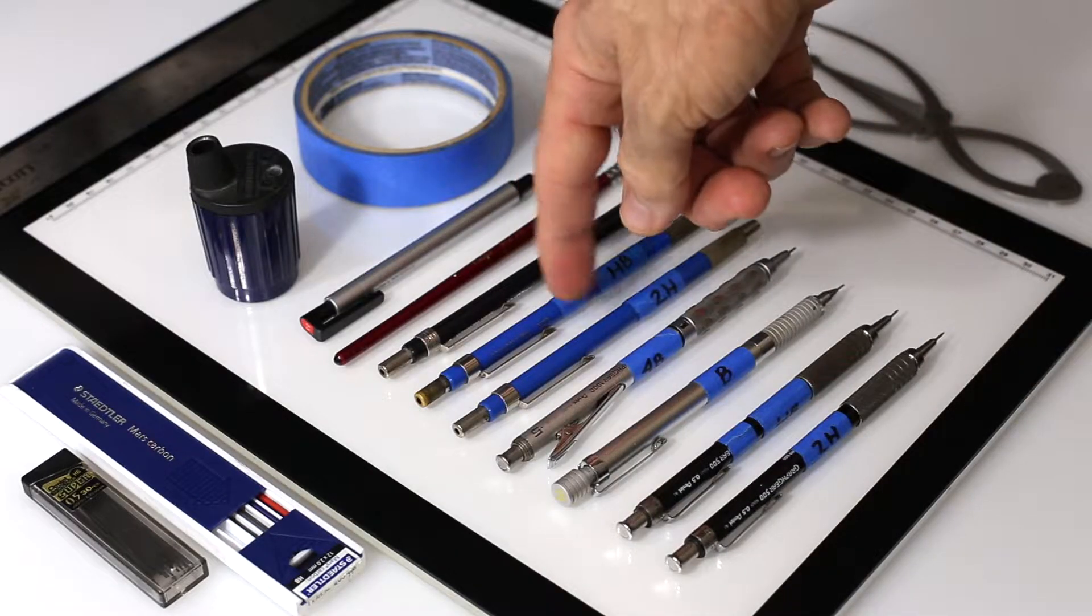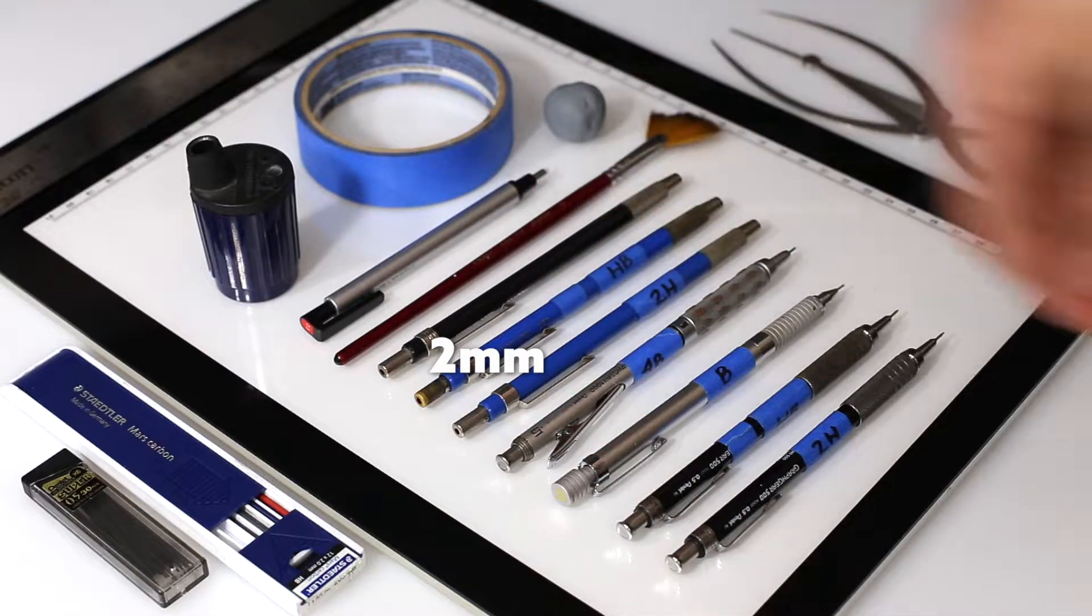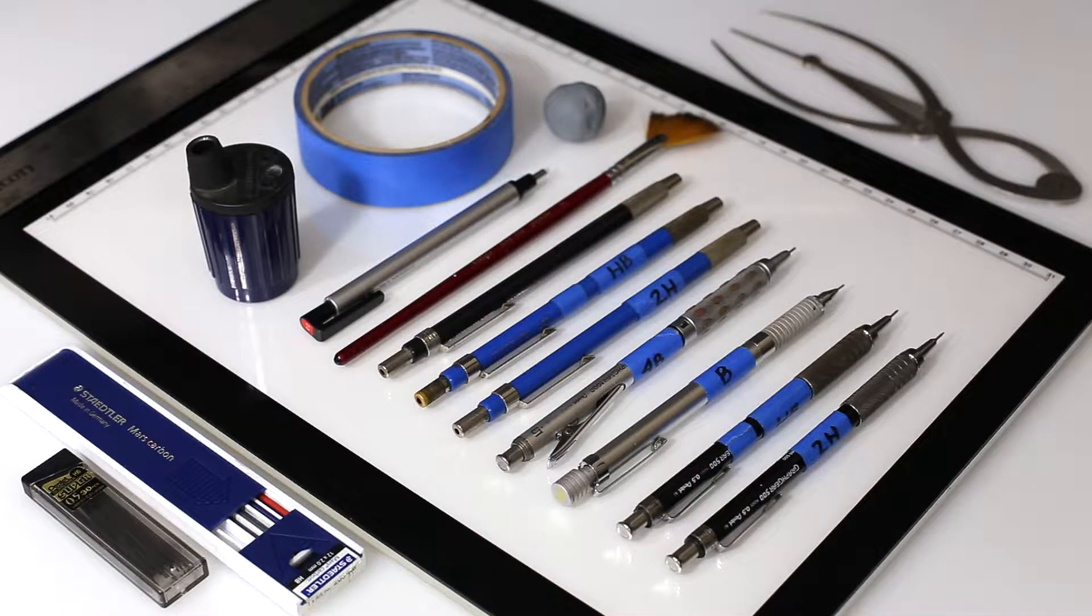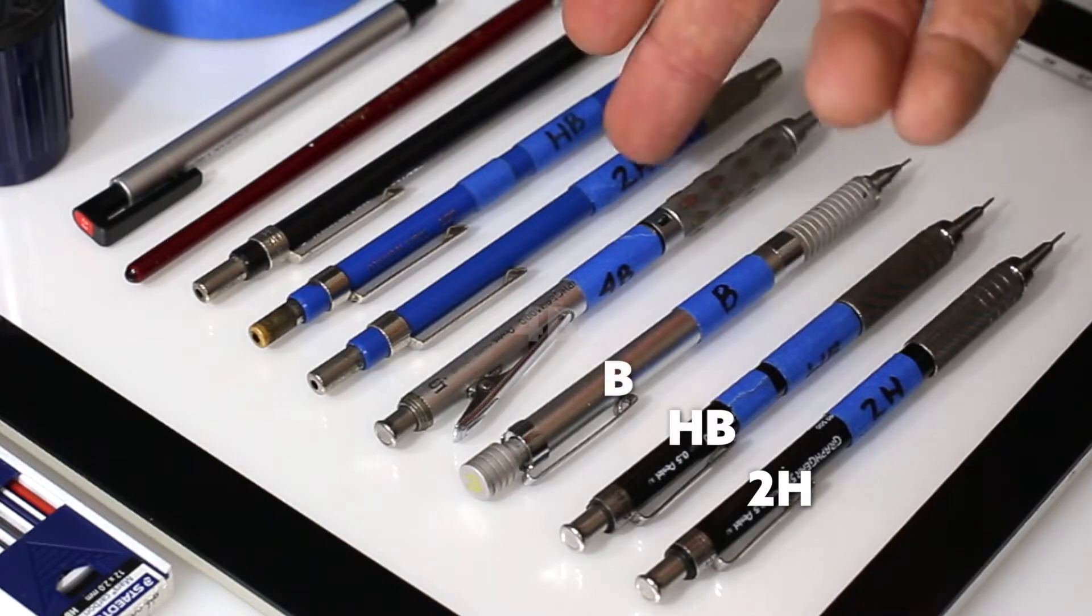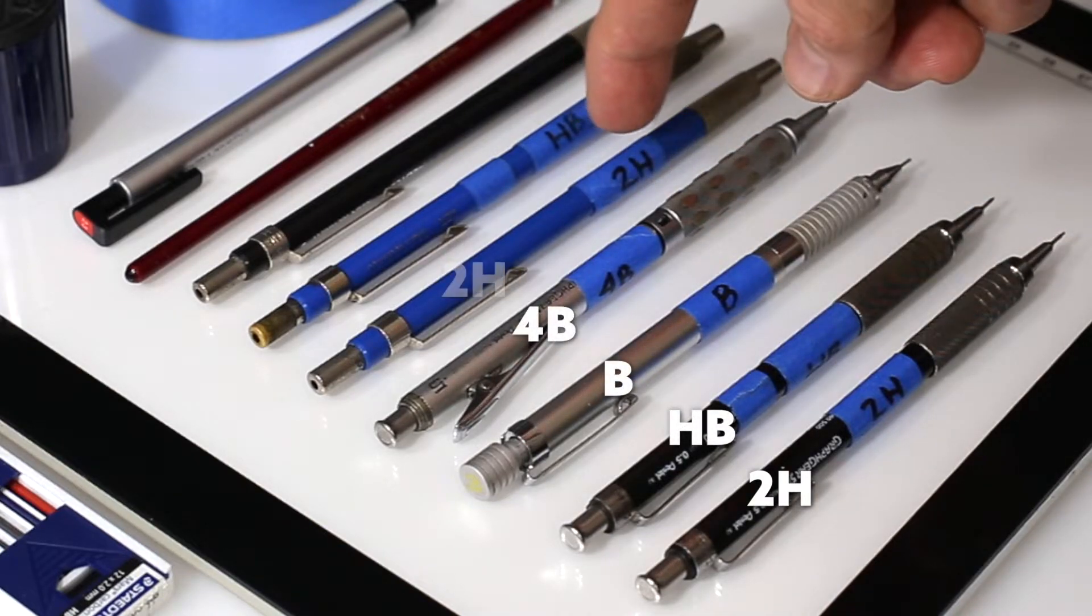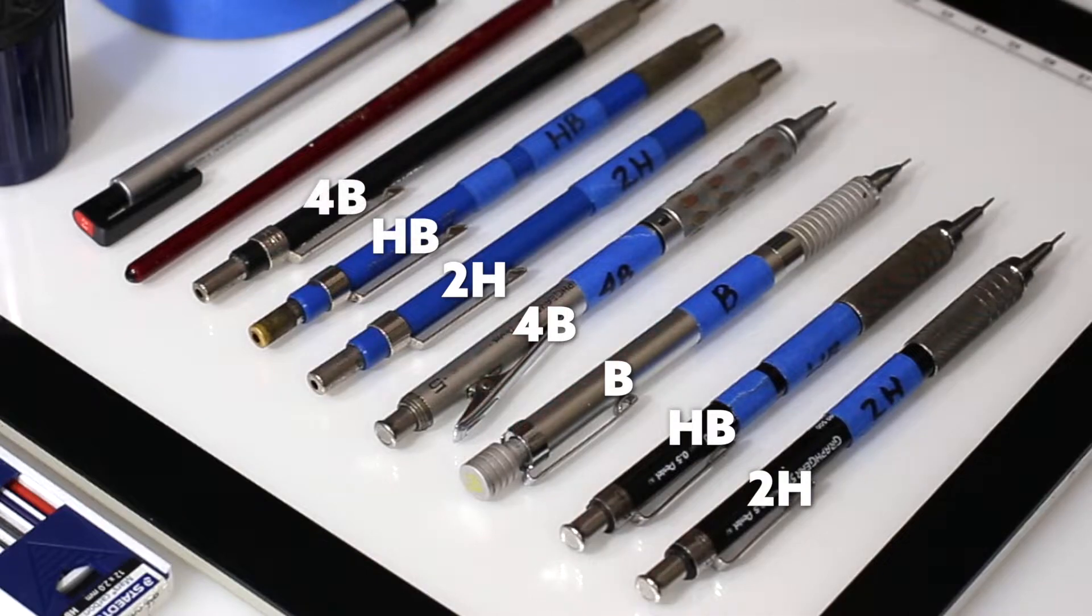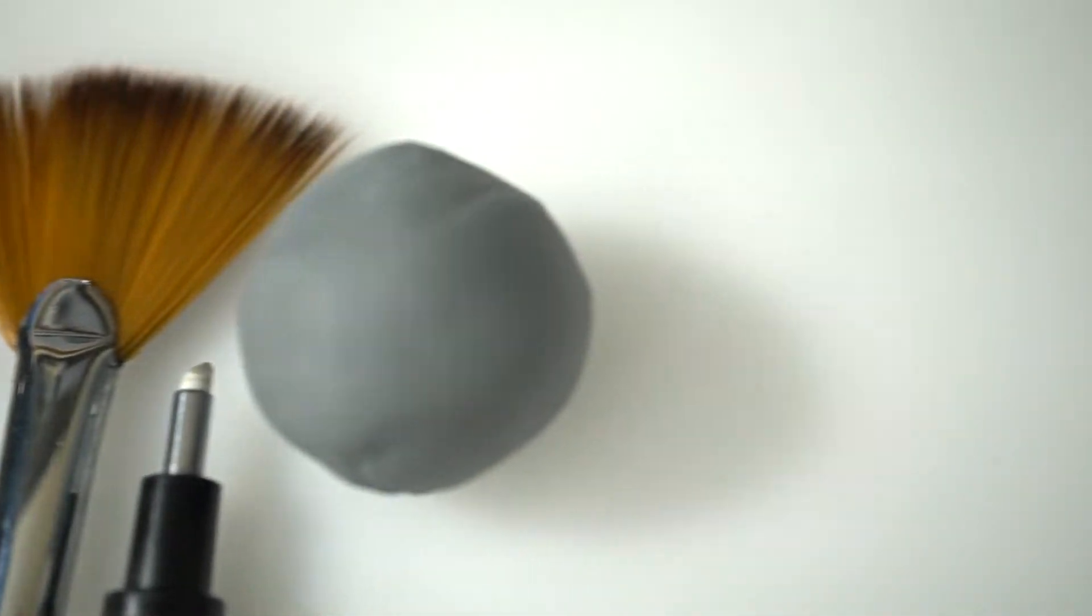We've got three lead holders with two millimeter lead inside. All different leads in all of these, ranging from 2H. We've got HB, B, and 4B. And then the lead holders have 2H, HB, 4B. So we've got mainly the same lead but in different pencils because of the way we use them.